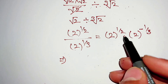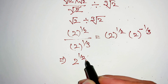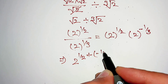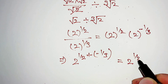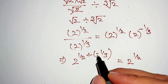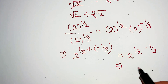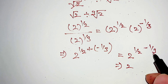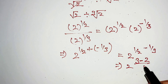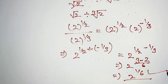Since the bases are the same, we add the powers: 2 to the power of 1 over 2 plus negative 1 over 3. The positive times negative becomes negative. Solving 1/2 minus 1/3 gives us 3 minus 2 over 6, which equals 1 over 6. So the final answer is 2 to the power of 1 over 6.